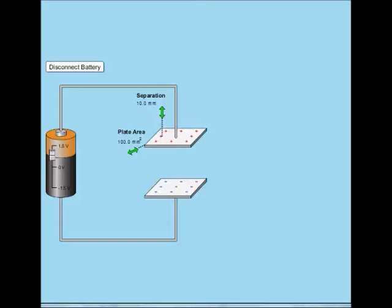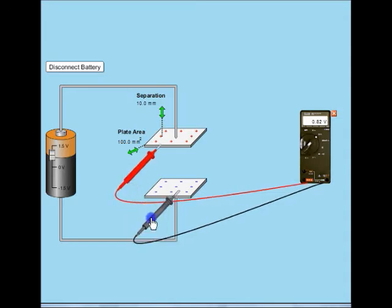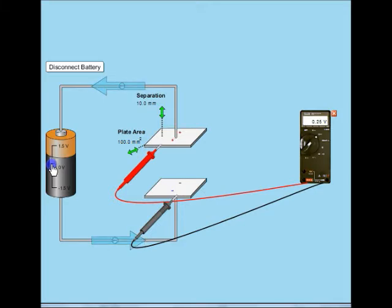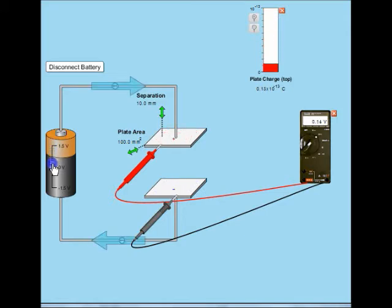Let us now investigate properties of this capacitor in more detail. The simplest thing I can do is measure the potential difference. I can take my voltmeter and connect its two terminals to the plates. I see there is some potential difference between the plates that varies as the charge changes. The more charge I have on the plates, the larger the potential difference is. When I change the charge, the charge goes up and down and consequently the voltage goes up and down as well.